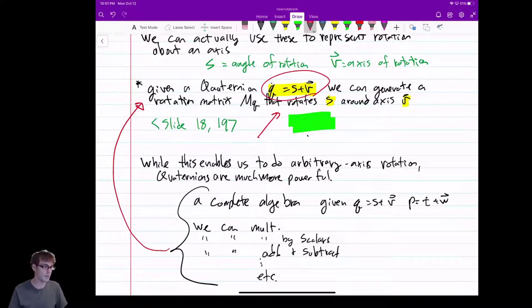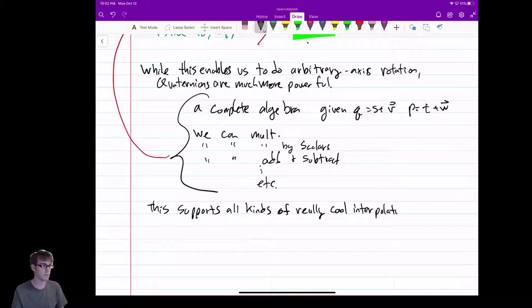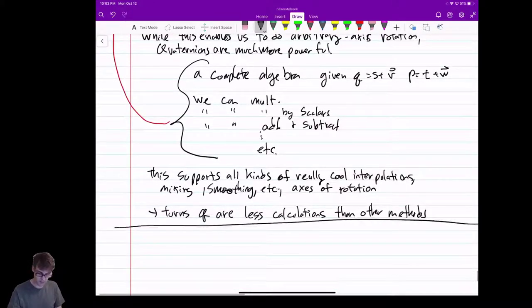So, quaternions are really, really, really cool. I'll write up some of this. So, this supports all kinds of really cool interpolations. Mixing, smoothing, etc., the axis of rotation. And to put the icing on the cake, it turns out that quaternions are less calculation than the other methods that we talked about. So, you save computational time. It hurts your head while you figure it out. But at the end of the day, it saves computational time. So, that's all we're really going to talk about for rotations.